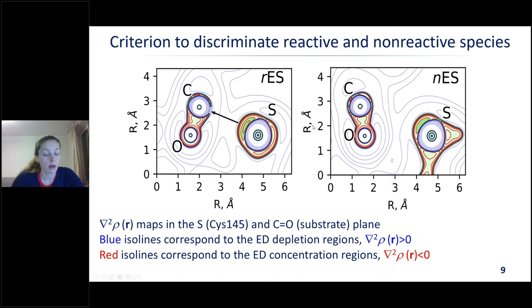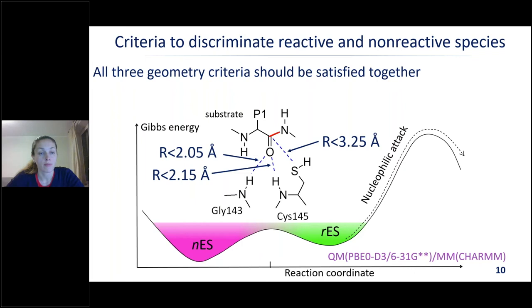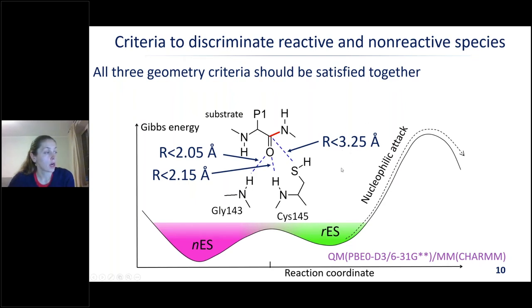Here are two Laplacian maps. On the left panel we see substrate activation: the electron density depletion area (electrophilic site) and, in bright green, the region of the sulfur atom corresponding to the electron lone pair that is going to attack the electrophilic site. On the right panel we see a representative non-reactive ES complex where there is no activation on the carbon atom. We decided to use this criterion — easily obtained from the trajectory — to classify our frames. With around 10,000 frames, we chose a set of frames with different geometry parameters to find geometric criteria responsible for substrate activation.